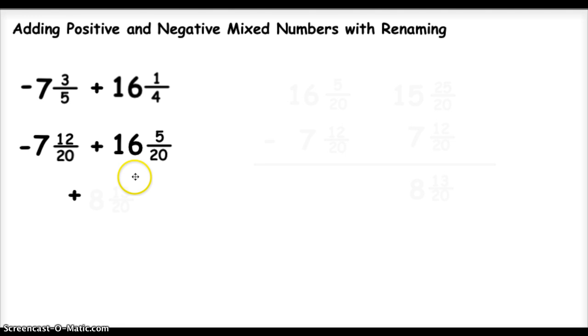So what I'm going to do is I'm going to take the bigger number, which is 16 and 5 20ths, and I'm forgetting about sign. So the bigger number, regardless of sign, is 16 and 5 20ths. And I'm going to subtract the smaller number, which is 7 and 12 20ths.